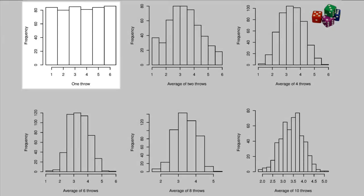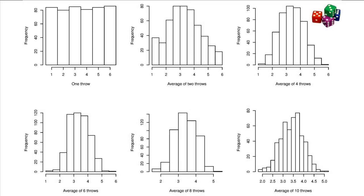Uniform distributions have finite variance, so we meet all the restrictions of the central limit theorem.